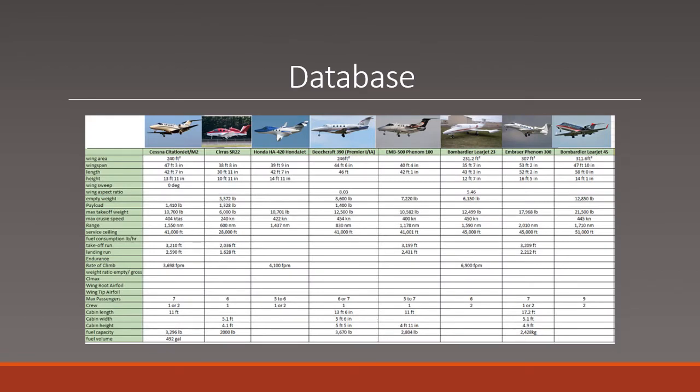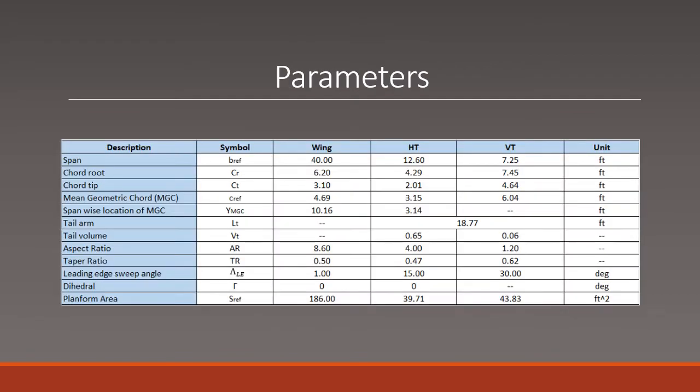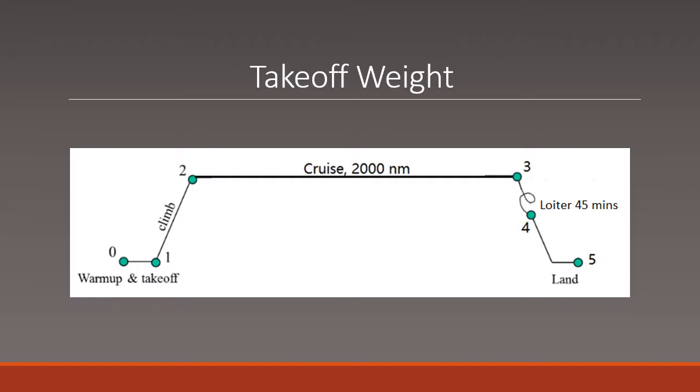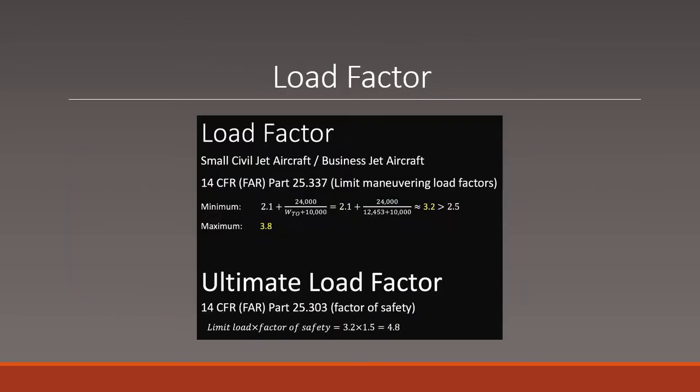The first step in our design was to collect a database of competitor aircraft in the light business jet category. This was to ensure that our calculated values would make sense and give us something to compare them against. The basic parameters for our aircraft wing design would be a wingspan of 40 feet with a chord root of 6.2 feet with a 0.5 taper ratio giving us a chord tip of 3.1 feet. Our takeoff weight was estimated to be approximately 12,800 pounds based off our weight estimation from a 2,000 nautical mile range with a 45 minute loiter time. The load factor according to 14 CFR Part 25 must be greater than 2.5 but no more than 3.8. From our calculations we got approximately 3.2 for our load factor. Our ultimate load factor is 4.8 based on our safety factor of 1.5.